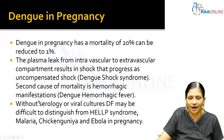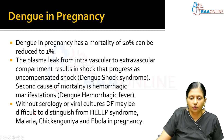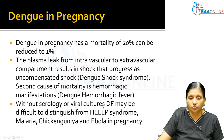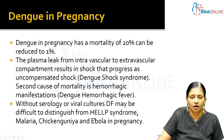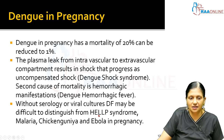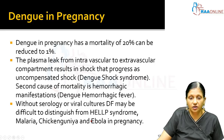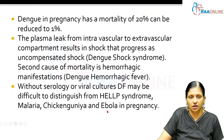Another cause of death is Dengue hemorrhagic fever (DHF). Without viral cultures, NS1 antigen, or IgG/IgM Dengue antibody testing, Dengue fever is very difficult to distinguish from HELLP syndrome (hemolysis, elevated liver enzymes, and low platelet count), malaria, chikungunya, or Ebola virus infection in pregnancy.